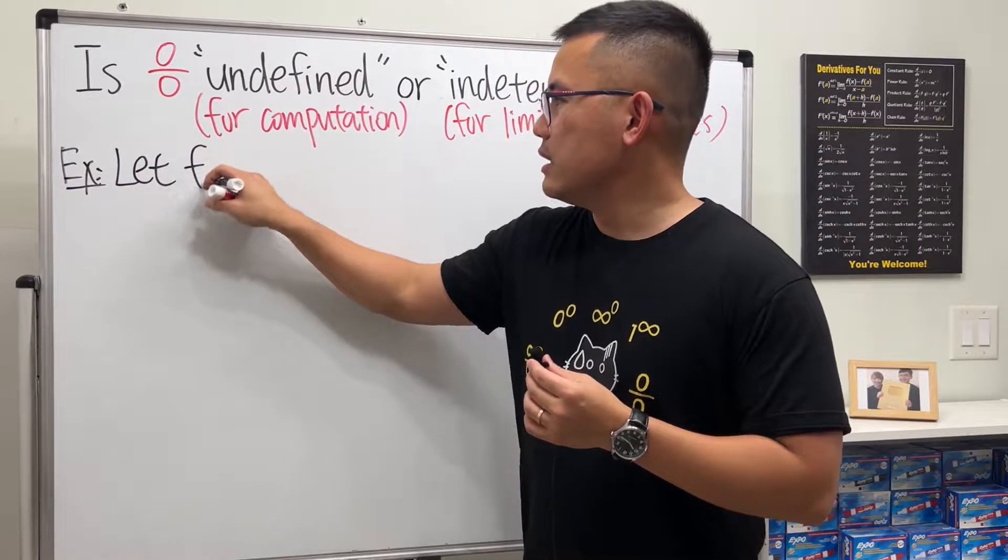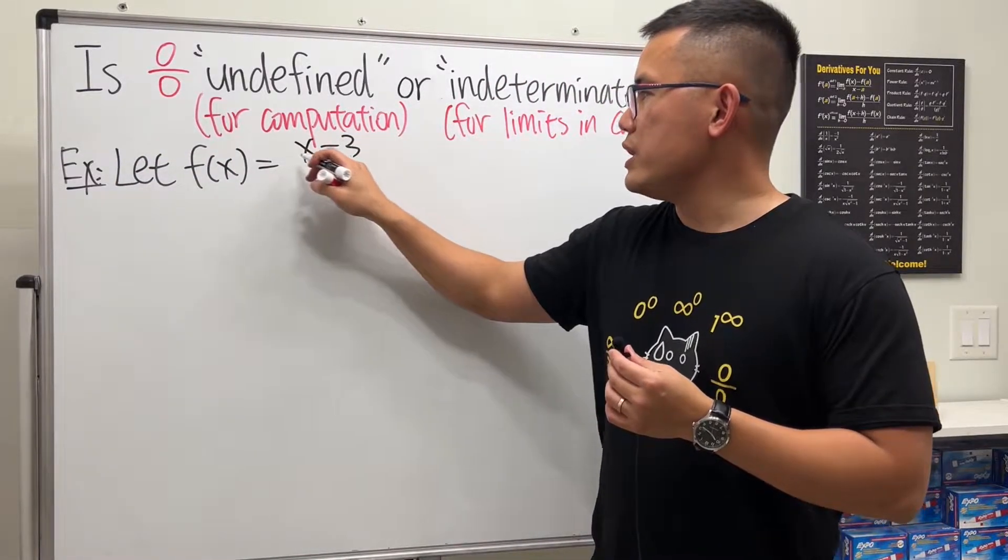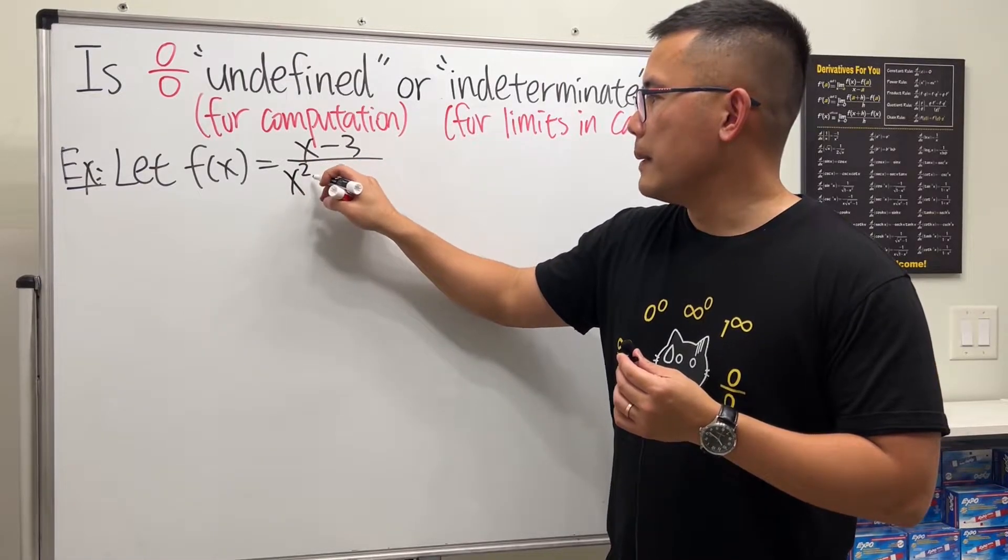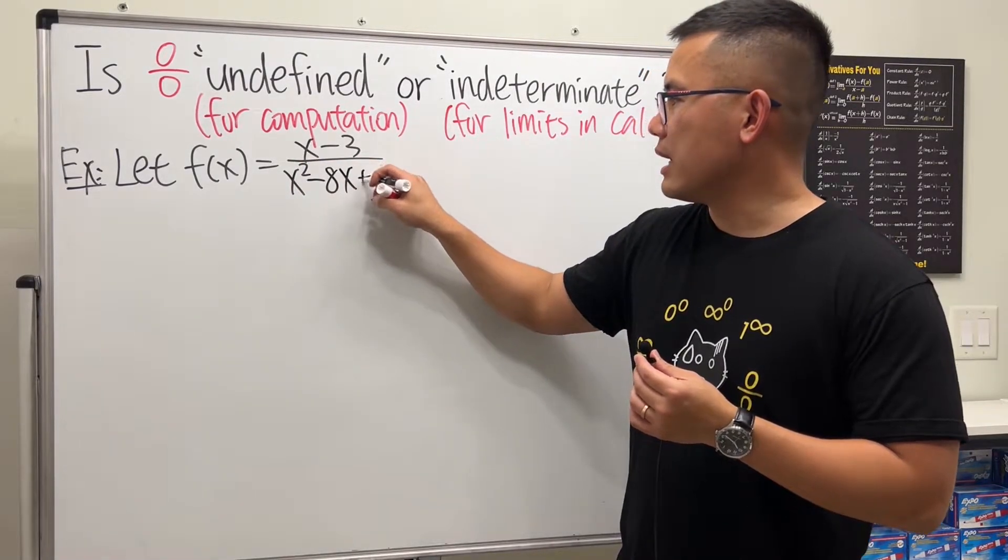Let me give you guys an example to make everything super clear. So let me say that a function, let's say x minus 3 over x squared minus 8x plus 15.